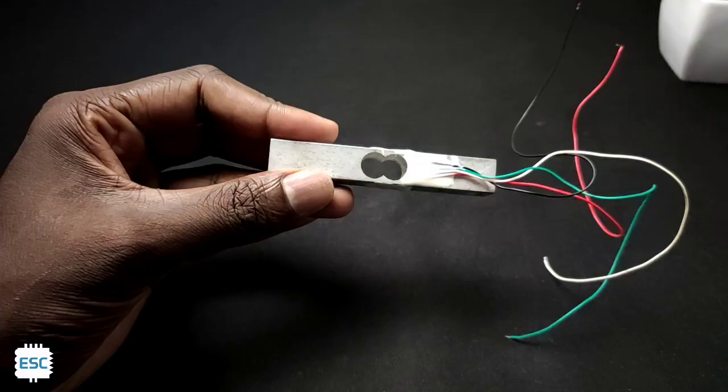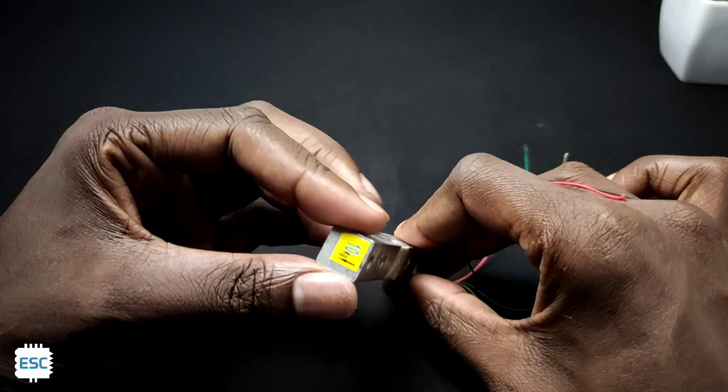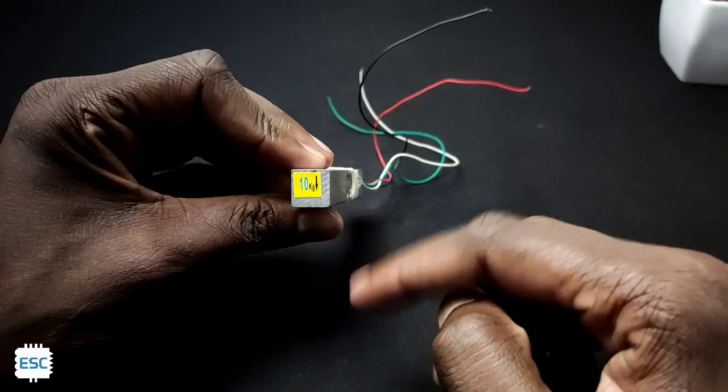This is the load cell and you can see it is marked with 10 kg, which means we can measure up to 10 kg with this load cell. A load cell is a transducer that transforms force or pressure into electrical output.